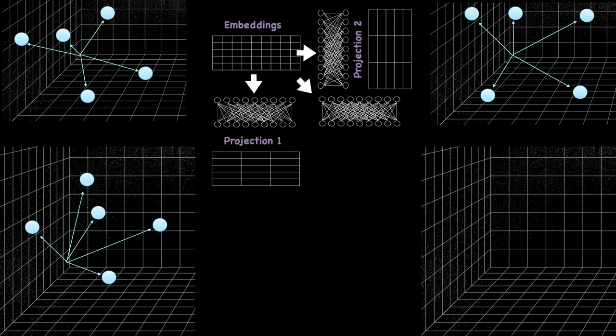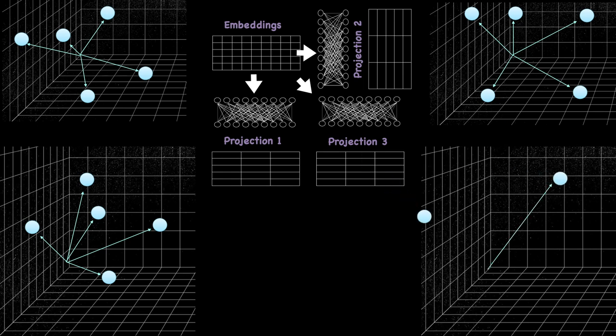The third layer produces Projection 3, also known as the value matrix. If we're in the question and answer encoder, the input matrix is the question and answer embeddings. If we are in the decoder, the input matrix is the output of the question encoder.